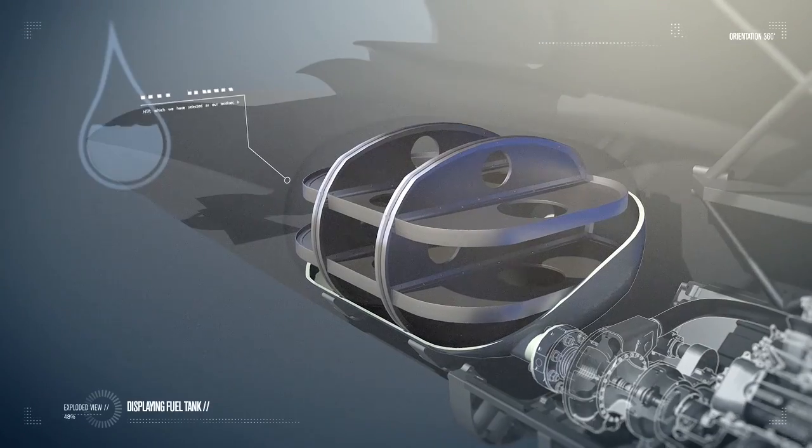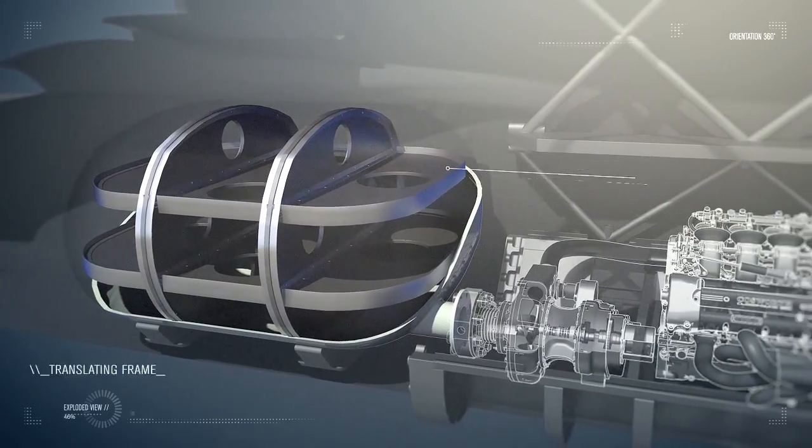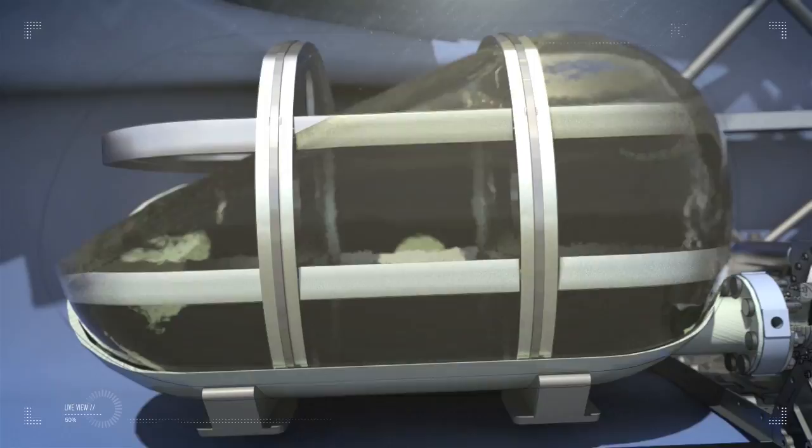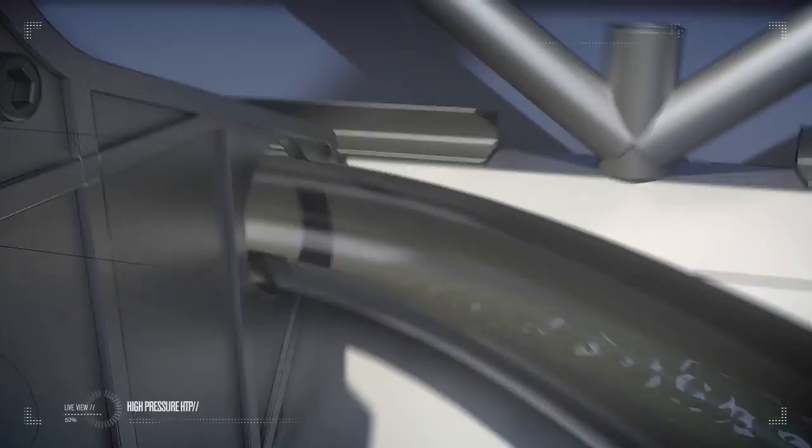The motor we'll be using on Bloodhound will be quite different in terms of size and oxidizer. In fact, it'll be hydrogen peroxide instead of oxygen that we've used today. It will also use a slightly different fuel that's based on rubber instead of acrylic, and obviously it'll generate a great deal more thrust. But the principles are exactly the same.